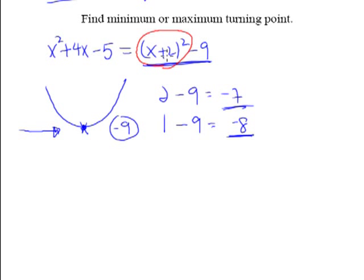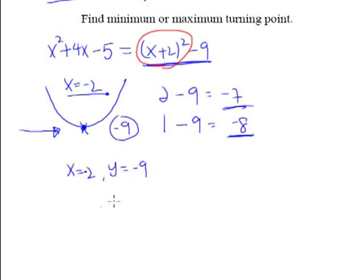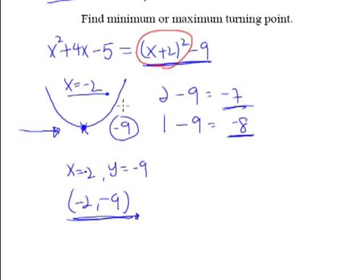When does the perfect square equal 0? When x is negative 2: negative 2 plus 2 equals 0, so 0 squared is 0, and 0 minus 9 gives minus 9. So when x equals negative 2, y equals negative 9 — these are the coordinates of the minimum point. No matter what x you throw in, the value will never go lower than negative 9, as shown in the graph. That is why it is a U-shaped curve, and this is what completing the square does — it helps us find the maximum or minimum point.